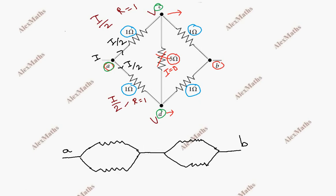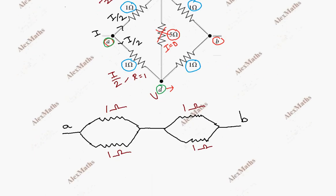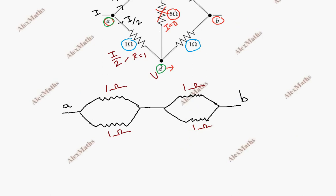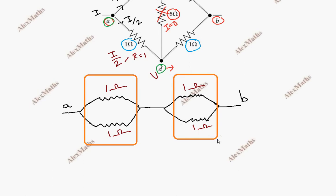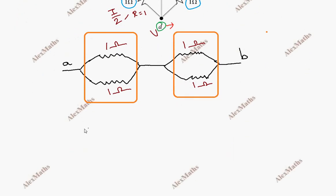So the equivalent resistance — we can remove that branch. Now, it is 1 ohm, 1 ohm, 1 ohm, 1 ohm, and 1 ohm. This is a parallel connection, so two pairs of resistors are coming up in parallel, giving us one equivalent resistance.